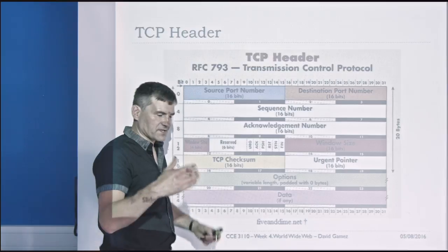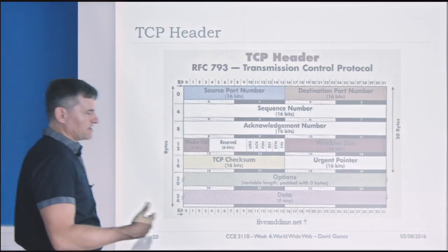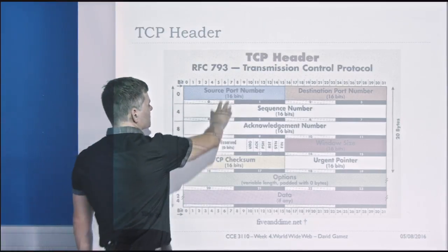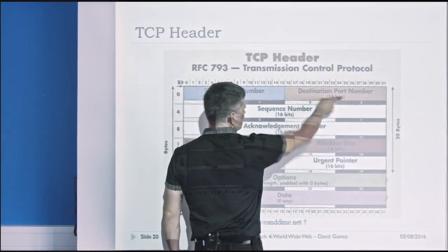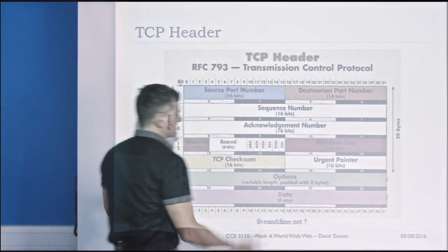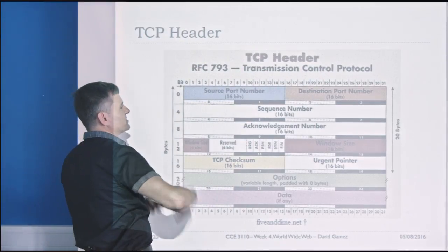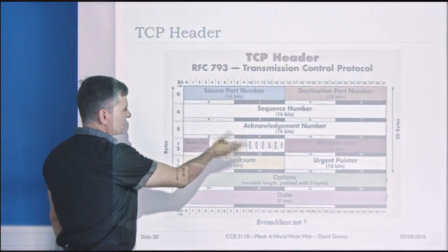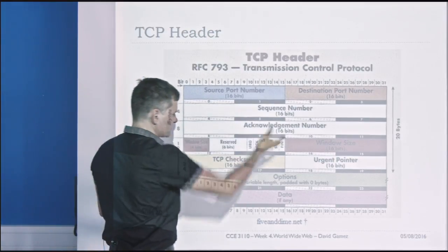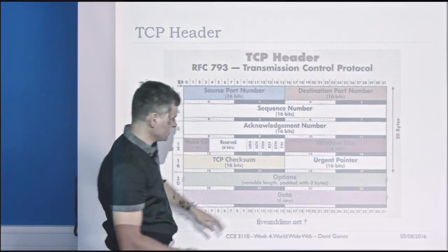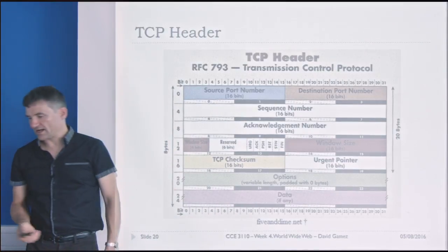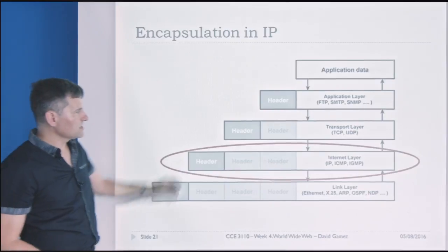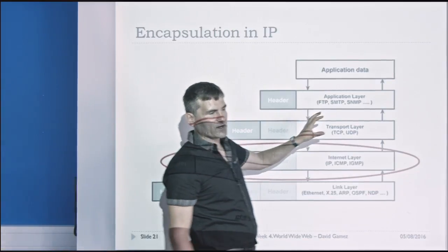The TCP header is stuck on the end of the HTTP message. It has a 16-bit source port number and a destination port number. All this header has is information about communicating between two ports, along with various bits to enable reliable transmission. At the bottom we've got the actual data we want to send. That's TCP — all well and good.